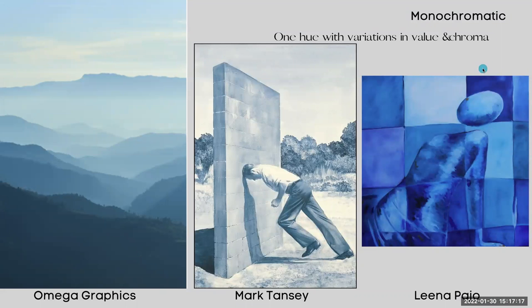The first color relationship we're going to focus on is the monochromatic. Unfortunately, when you do a Google search of monochromatic, they actually give you achromatic color harmonies. Monochromatic means one color — one hue with variations in value and chroma. I have three examples here that all investigate blue or blue-green in various ways.